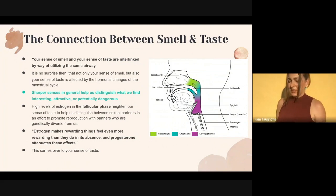Sharper senses help us distinguish what we find interesting, attractive, or potentially dangerous. High levels of estrogen in the follicular phase heighten our sense of taste and help us distinguish between sexual partners, maybe in an effort to promote reproduction, particularly with partners who may be genetically diverse from us. Estrogen makes rewarding things feel even more rewarding, while progesterone attenuates these effects.